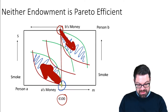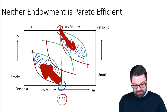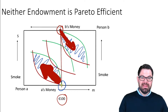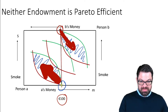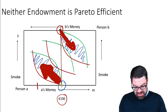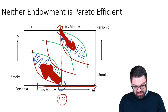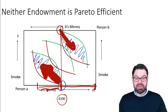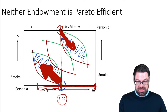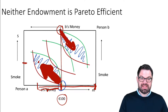Starting with the green star and moving north-west from there: what it would mean is that person A pays person B for the right to smoke. Person B would have a bigger endowment because they receive payment from person A. But person A, in compensation, no longer smokes zero — instead they now smoke at some positive level.